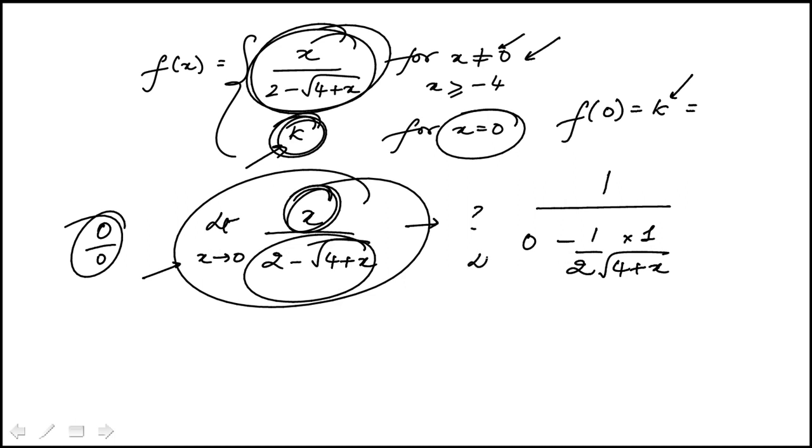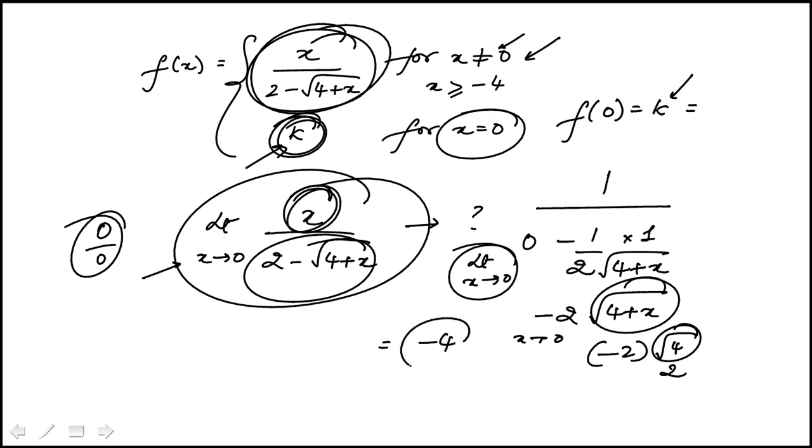And then we're going to evaluate this as x equal to 0. So that becomes minus 2 times square root of 4 plus x. As x goes to 0, you'll see this becomes minus 2 times square root of 4, which is 2. So the limit of this function is minus 4.